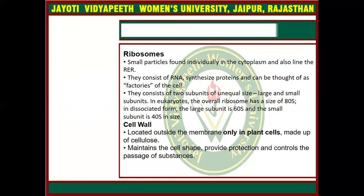The next organelle is cell wall, which is found only in plant cells or in some microbes. Cell wall is present in plants and microbes but it is absent in animal cells. It is made up of cellulose, and it maintains the cell and provides protection from external damage.